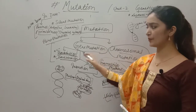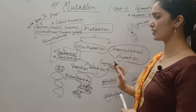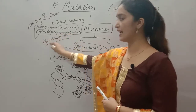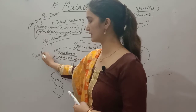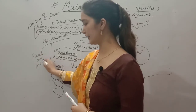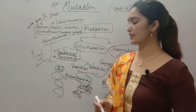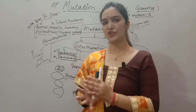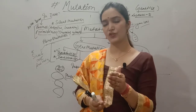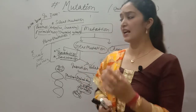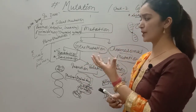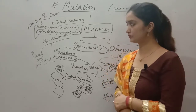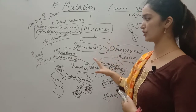Mutations not causing frame-shift — those that change only one position due to transition or transversion — are called point mutations. Point mutation also leads to diseases like sickle cell anemia. In sickle cell anemia, in the beta-globin chain of hemoglobin, at the sixth position, glutamic acid is changed to valine. This single point mutation results in the RBC changing from its normal circular shape to a crescent/sickle shape.